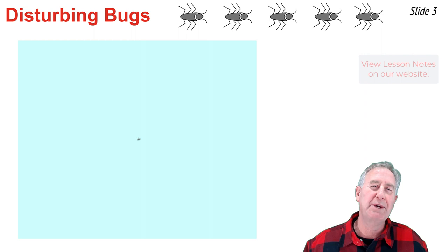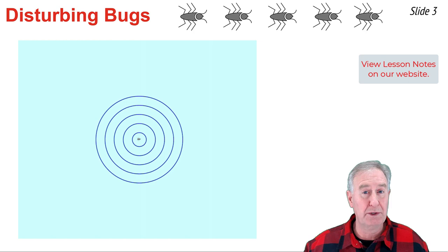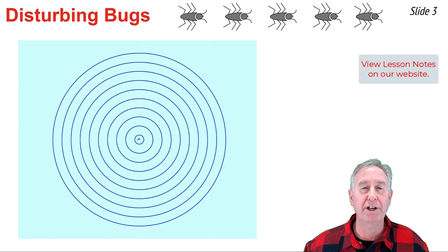Let's suppose we have a water bug that periodically disturbs the water. The result is a series of disturbances or wavefronts would be produced that travel at the same speed in all directions. These circular wavefronts would be concentric in nature and centered at the same location — the bug's position.